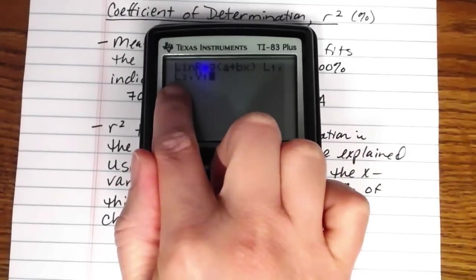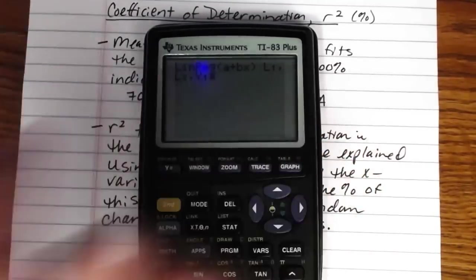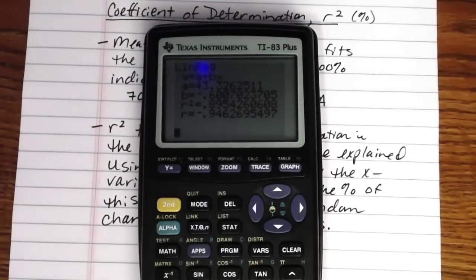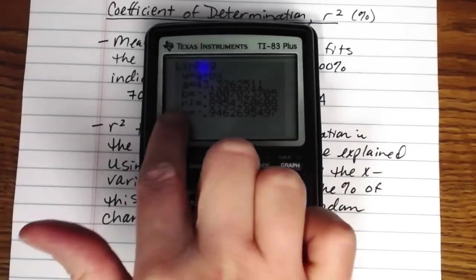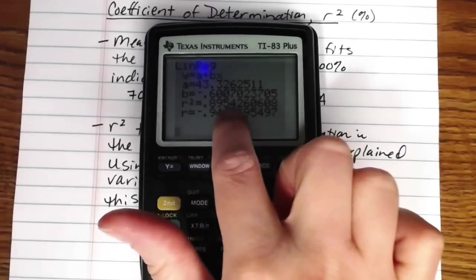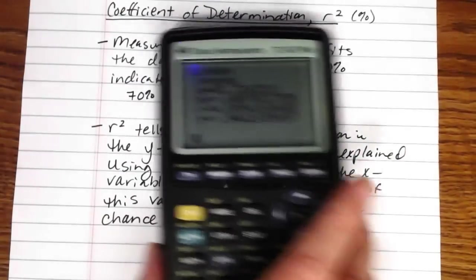So this will compute the line of best fit for the x data in list one, y data in list two, and it will store the equation of that line in y1 so that it will show up on top of your graph. And then press enter. And here, we've done things now with the A and the B and the r. Here's our r squared, 0.895. So if we rounded that to two decimal places, we're looking at about 90%.